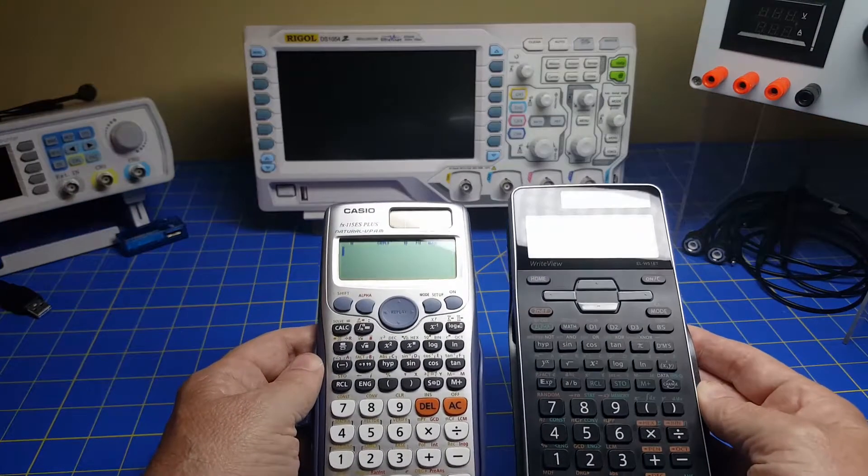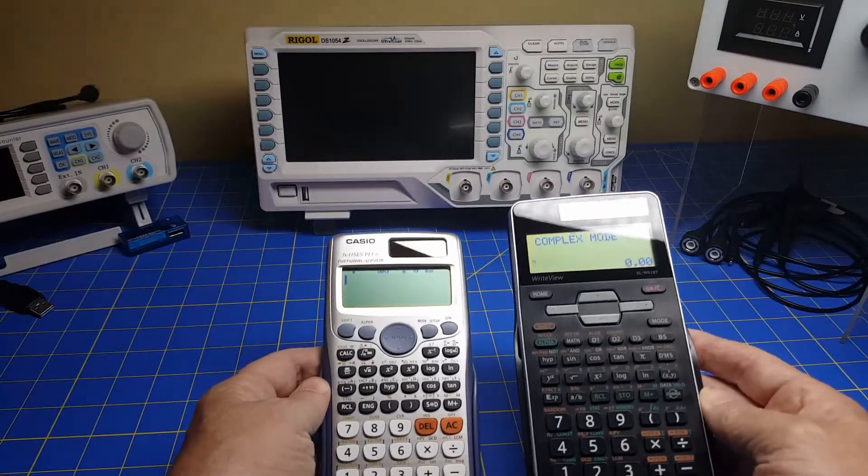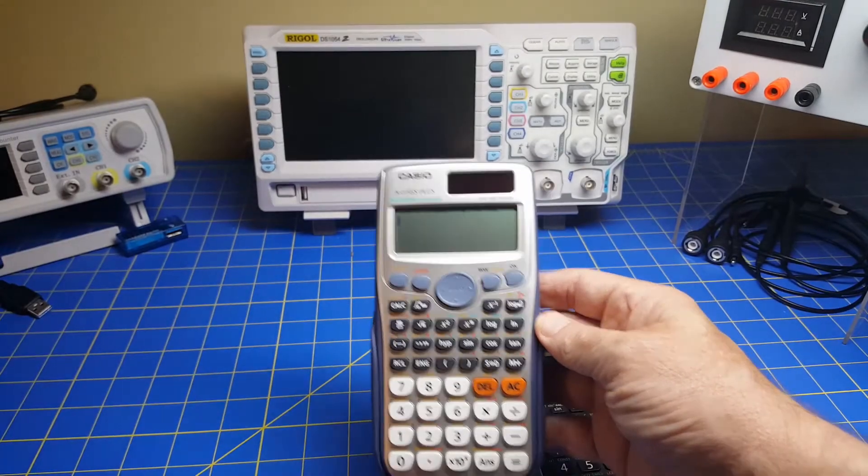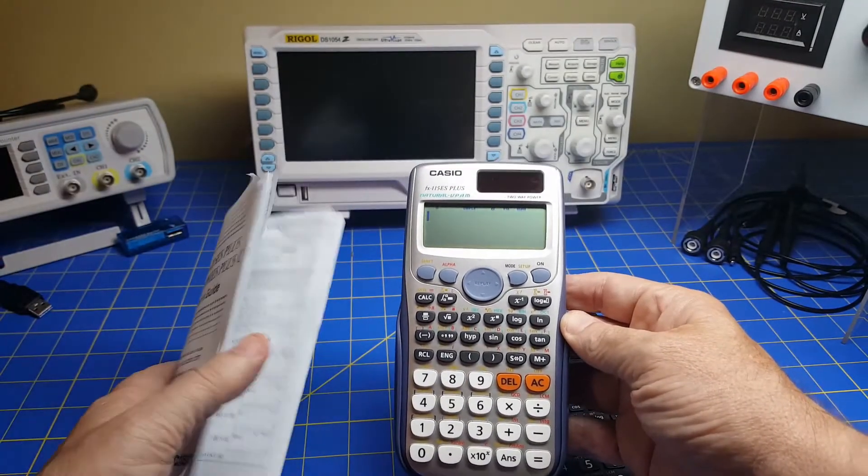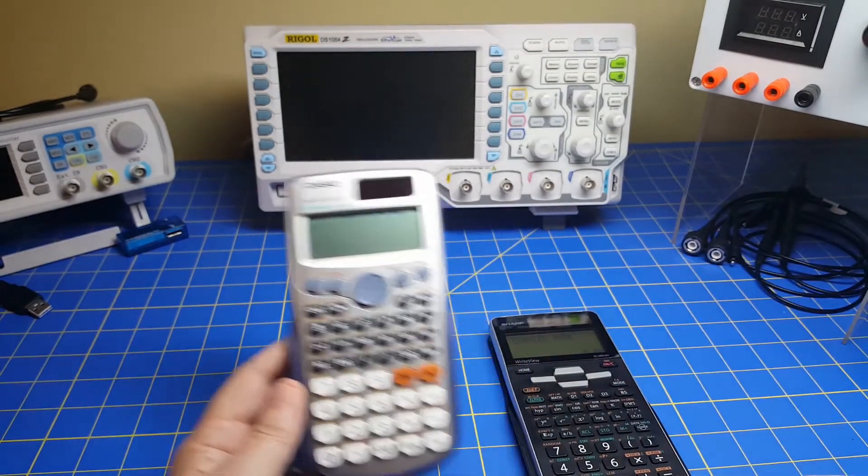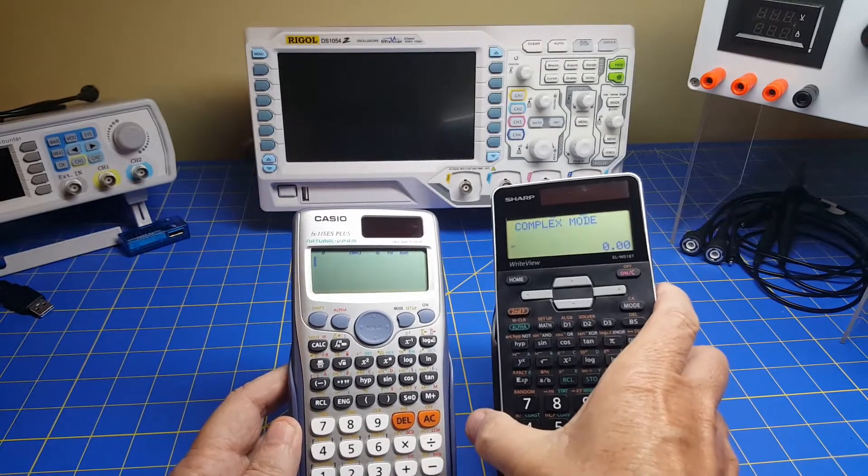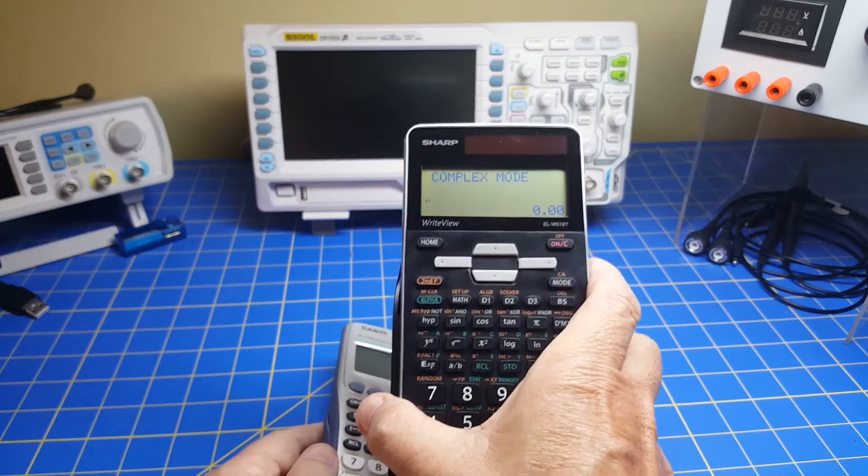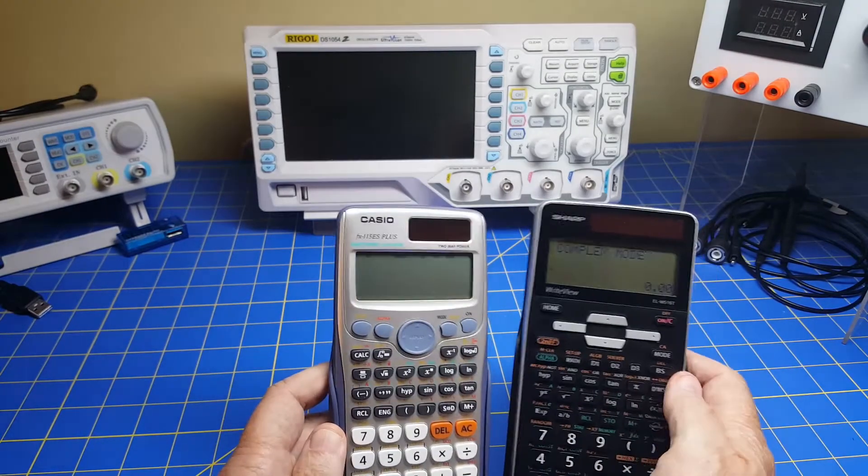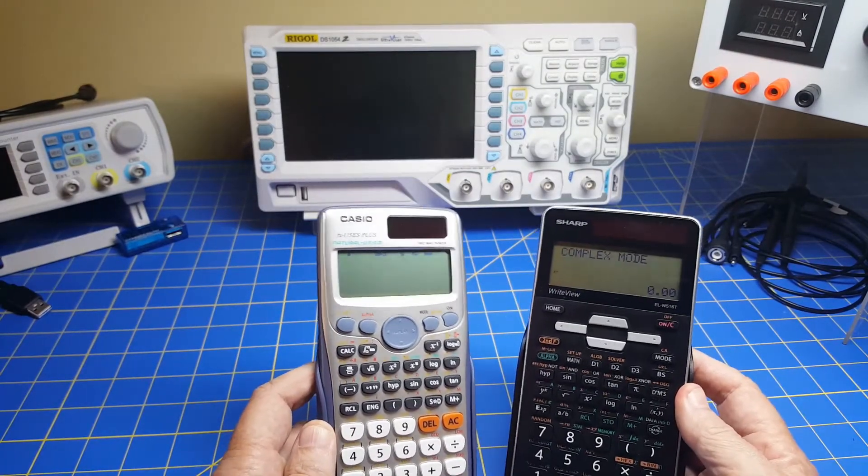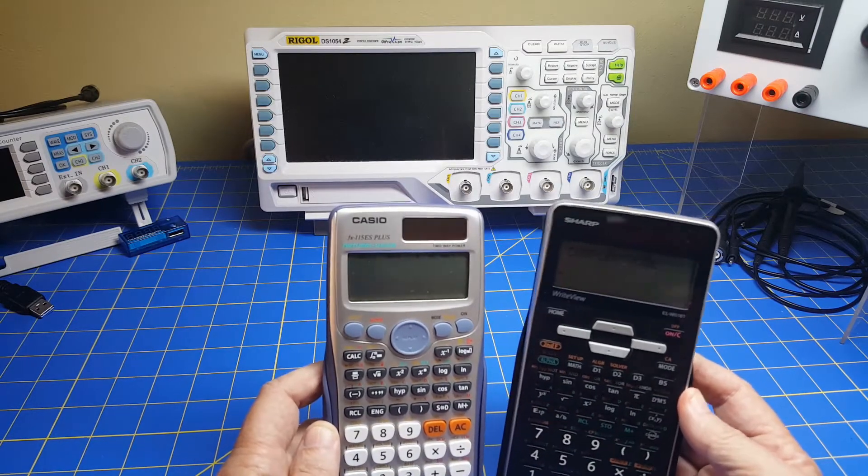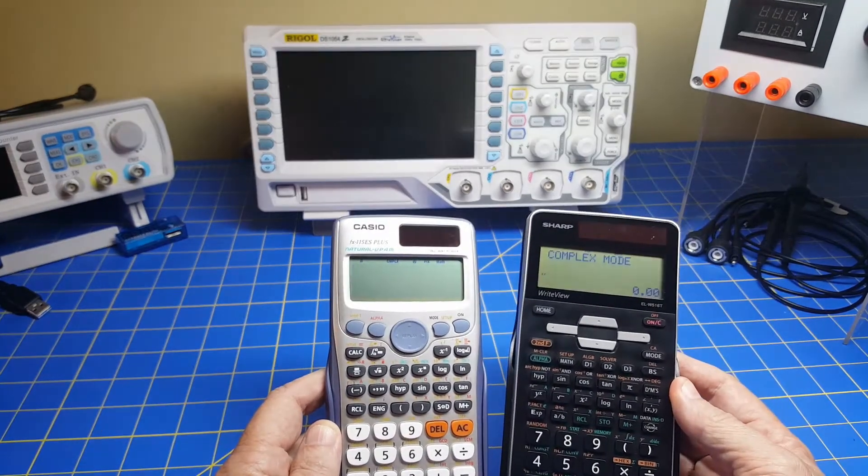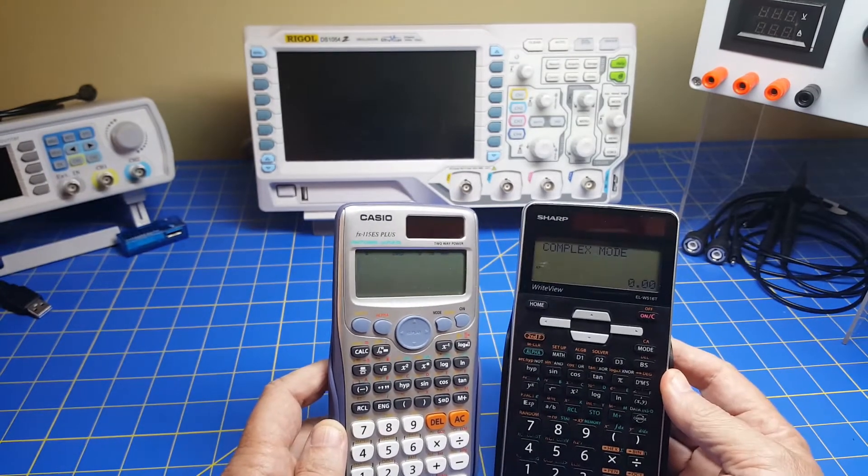The other thing is these are fairly complex devices and you're going to need to have some instructions on how to use them. Now, this Casio FX-115ES comes with a nice little manual. So you can look at it if you're using your calculator and you need to figure it out, you run to the manual. This Sharp ELW-516 doesn't come with a manual. So now you have to download a PDF onto your computer and either print it out or do something. It's really kind of annoying. So those are the two big things.